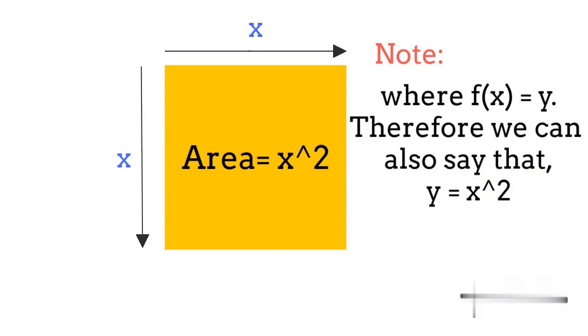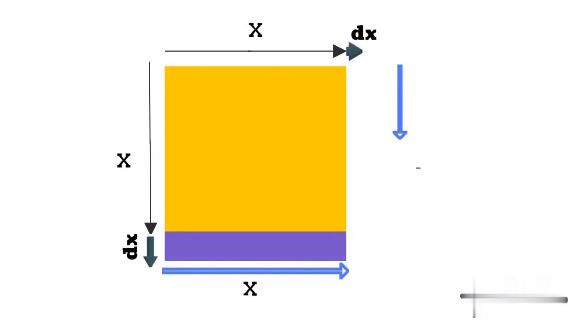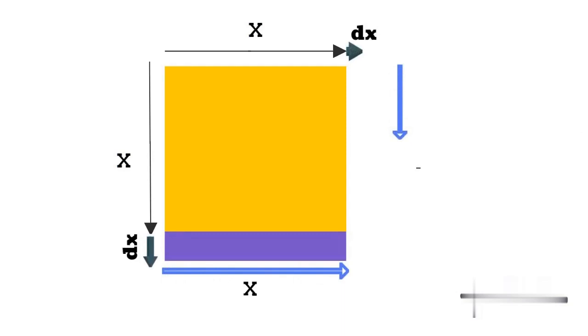Now if you increase x by just small amount dx, you can see what happens here is the area of this square is increasing in two dimensions.